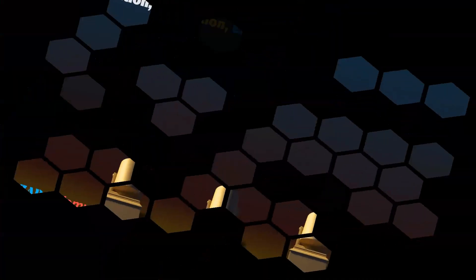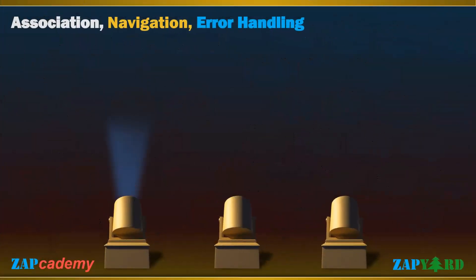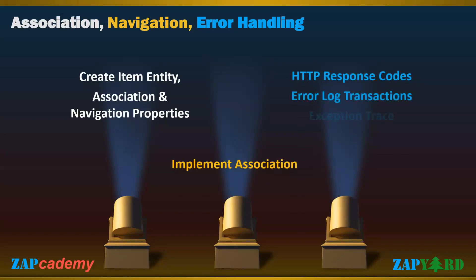Associations and navigation are important topics in SAP NetWeaver Gateway which need some time and practice to master. We will create an item entity and then showcase the association and navigation properties with good practical examples. We will implement the association and check the flow of data in debug mode to add more clarity.